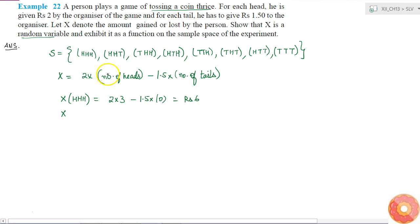And now, for all these three cases, what will be the value of X? X of HHT is equal to X of HTH is equal to X of THH. These three will be equal because the number of heads and the number of tails in all these three elements of the sample space is same. This will be equal to 2 times the number of heads is 2 minus 1.5 times the number of tails is 1. So, this is equal to 4 minus 1.5 which is equal to 2.5. This is the gain of the person.